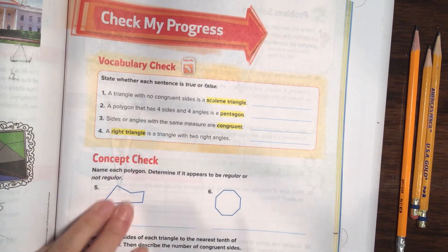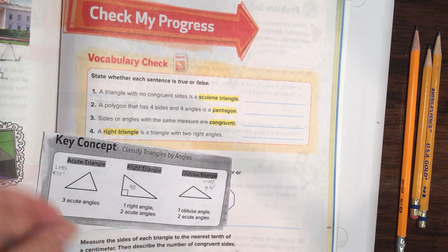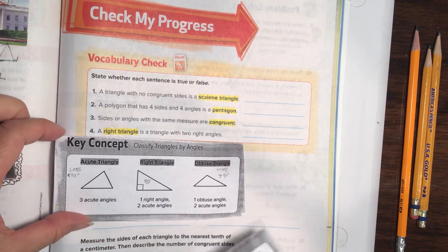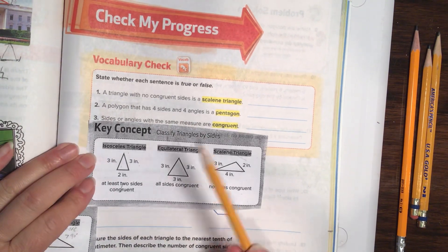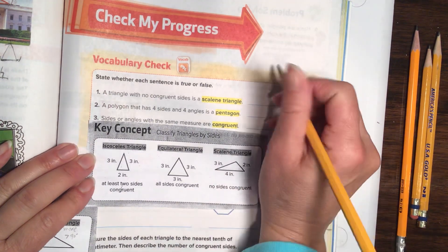Alright, we are talking about number one. A triangle with no congruent sides is a scalene triangle true or false? So let's talk about a triangle. Okay, here is our classification by sides. No congruent sides. Yep, that is true.